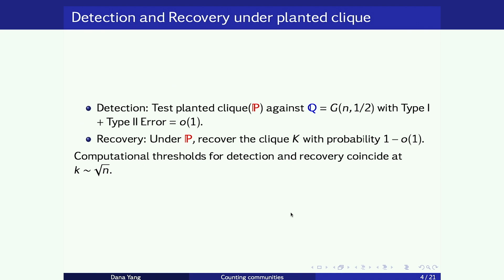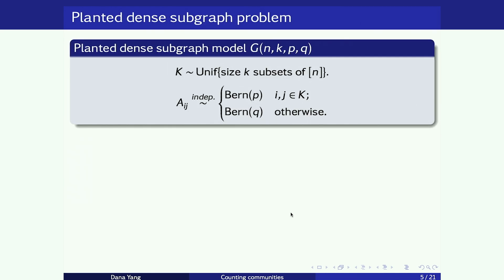If we move to the planted dense subgraph model, we already see a drastic change in the landscape. Suppose you still have a size-K subset uniformly chosen, but the edge probabilities inside the community follow Bernoulli(p) and outside edges follow Bernoulli(q), where p is larger than q. This problem has a somewhat complicated but very elegant phase diagram.